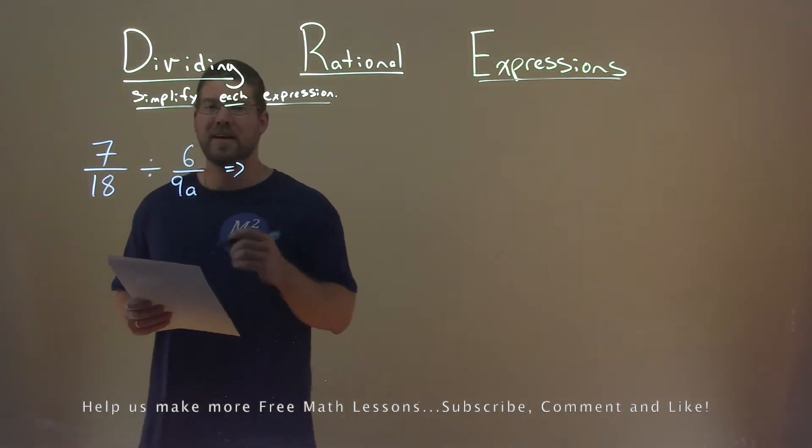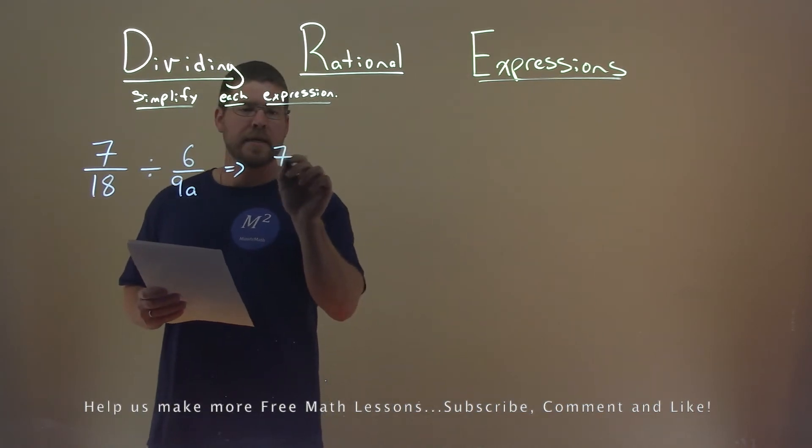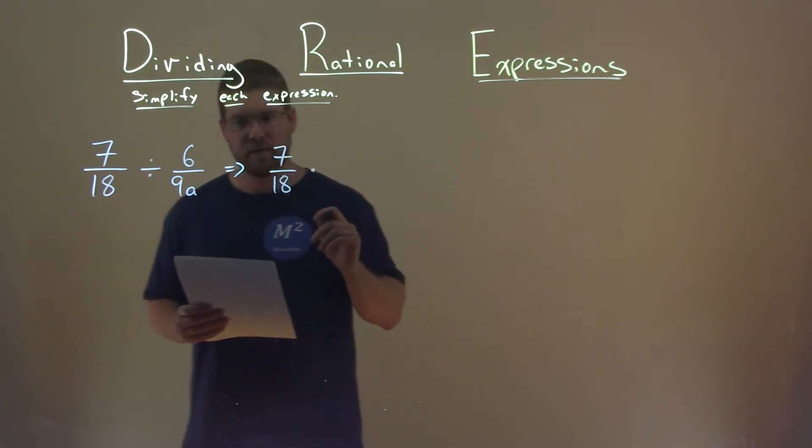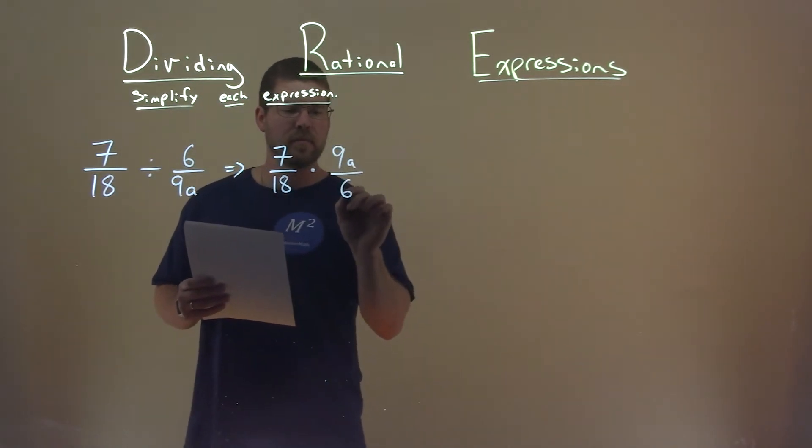I first like to write this as a multiplication problem. 7 over 18 stays the same, but instead of dividing, we're multiplying, and we flip the second fraction. 9a over 6.